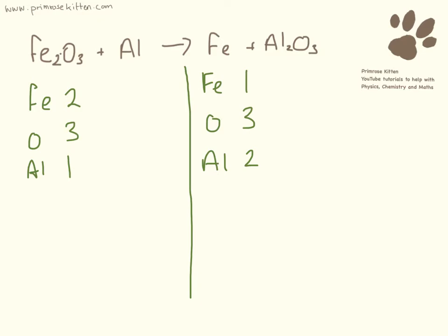So we can see that the oxygens already are balanced. So I'm going to start off by looking at the aluminiums. I've got two over this side and I've got one over this side. So the best thing, the easiest thing for me to do is just to pop a two in front of there. Two, three, two, and everything is now balanced.